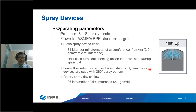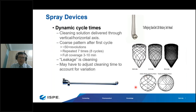The rotary jet head delivers cleaning solution through a vertical or horizontal axis at high pressure. As time increases, the coverage becomes denser until almost all surfaces are covered with a high-pressure spray jet. This is another type of spray device that can be used for CIP tank cleaning.